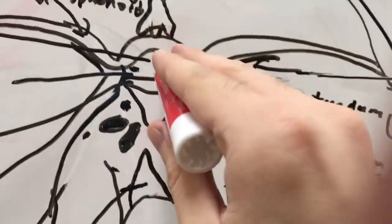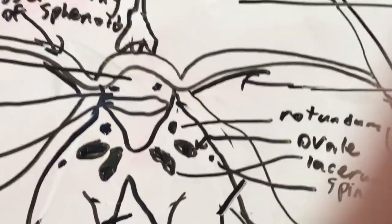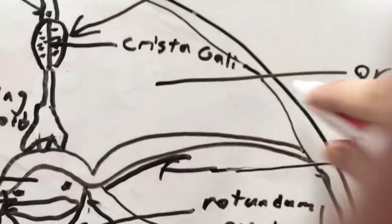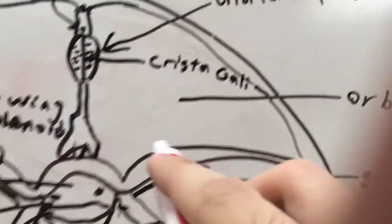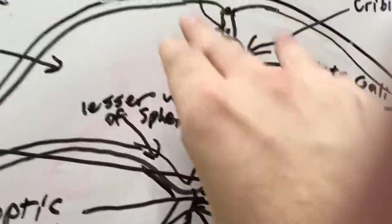Here we have the optic canal, these foramen where the optic nerves are supposed to go through and they're on top of the sella turcica. Oh, by the way, this is the orbital frontal plate. So your frontal lobe would rest on that.